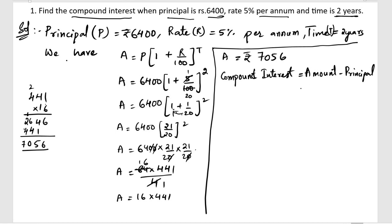So, amount is how much? 7056. What is the principal amount? 6400. Let us subtract 7056 minus 6400. So, we will get 655, 10 minus 4 is 6,